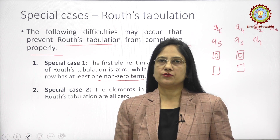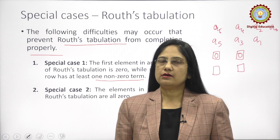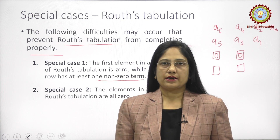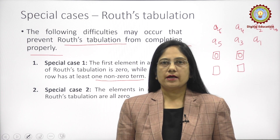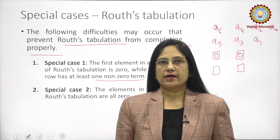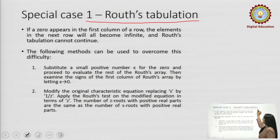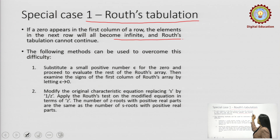If a zero appears in the first column of a row, then the elements of the next row will become infinite — that is, we cannot go ahead and the tabulation cannot continue. If a zero appears in the first row, the tabulation cannot be completed because the zero comes in the denominator of the formation of the table, and the term becomes infinite.